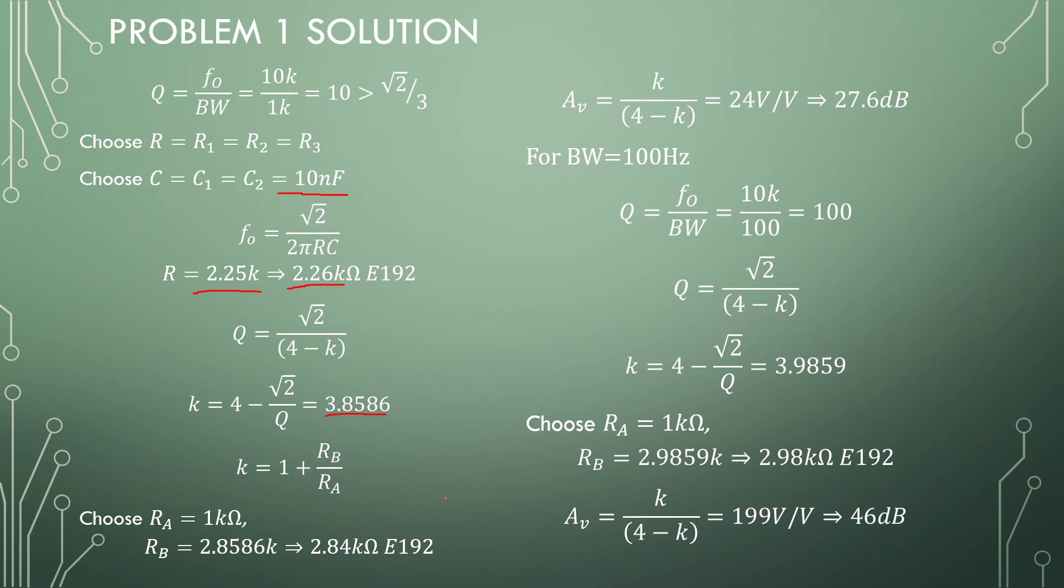Choose RA 1 kilo-ohm, and RB will be 2.8586 kilo, and the closest is 2.84 kilo-ohms. Plug this into the K over 4 minus K equation, and you will have a 27.6 decibel gain for this filter.